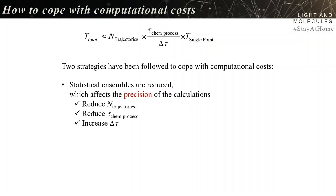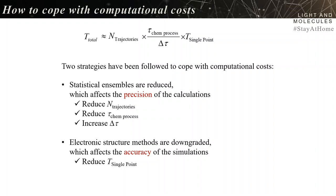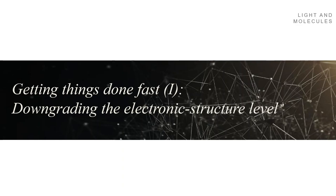The second strategy is much more critical: downgrade the electronic structure method to reduce the time to compute a single point. This affects the accuracy of the simulation, and it isn't so easy to fix anymore. Getting things done fast means downgrading the electronic structure level.